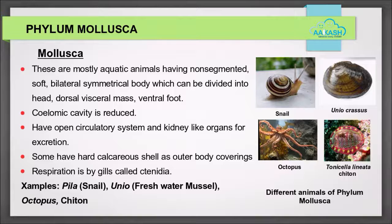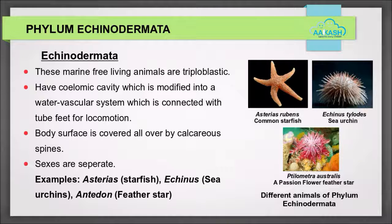Phylum Mollusca: these are mostly aquatic animals having a non-segmented, soft, bilaterally symmetrical body which can be divided into head, dorsal visceral mass, and central foot. Their coelomic cavity is reduced. These animals have an open circulatory system and kidney-like organs for excretion. Some animals have a hard calcareous shell as outer body covering. Respiration is by gills called ctenidia. Examples: Pila (snail), Unio (freshwater mussel), octopus, and chiton.